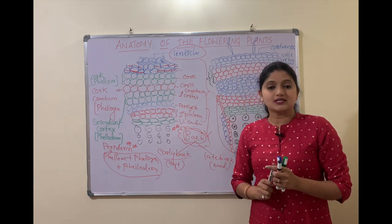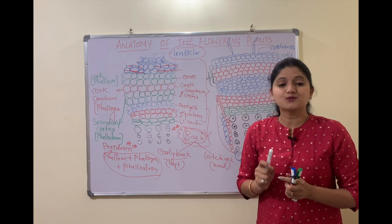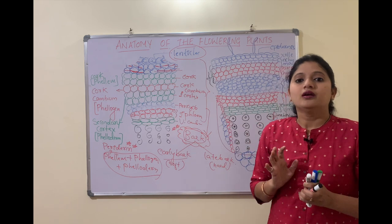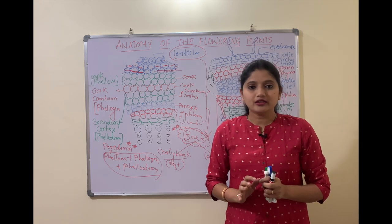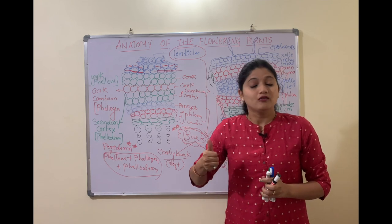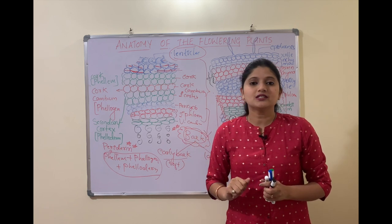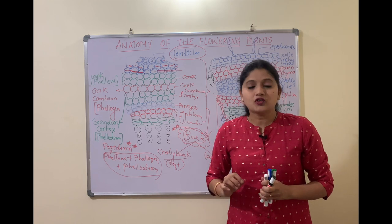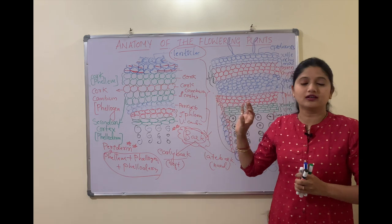This is about the secondary growth in the region of the cortex by the activity of the cork cambium. Remember, in the dicot stem the secondary growth takes place in two regions: one is the vascular region due to the vascular cambium, and the other is the cortex region due to the activity of the cork cambium.